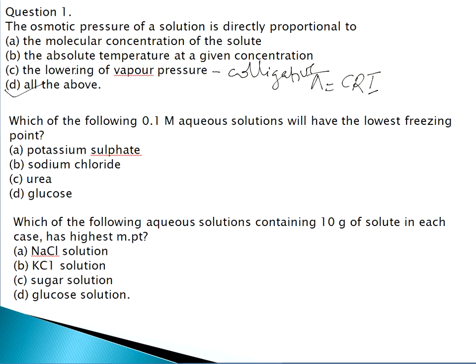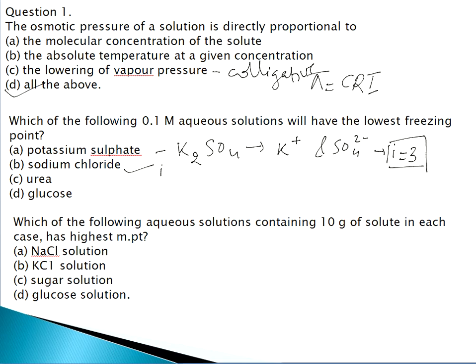Question 2: Which of the following 0.1 m aqueous solutions will have the lowest freezing point? The options are potassium sulphate, sodium chloride, urea, or glucose. K₂SO₄ dissociates into K⁺ and SO₄²⁻, giving an i-value of 3, the highest among the options. NaCl gives i = 2, while urea and glucose give i = 1. The correct answer is potassium sulphate.